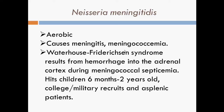The Waterhouse-Friderichsen syndrome results from hemorrhage into the adrenal cortex during meningococcal septicemia. It is also known as hemorrhagic adrenalitis, defined as adrenal gland failure due to bleeding into the adrenal glands caused by severe bacterial infection. Infection hits children 6 months to 2 years old, college or military recruits, as well as asplenic patients. Asplenia refers to the absence of normal spleen function, associated with severe risk of infection.